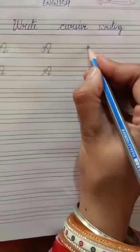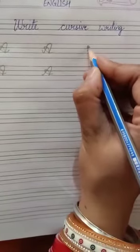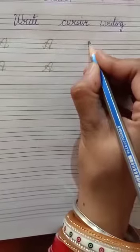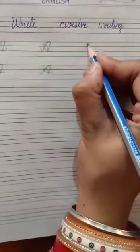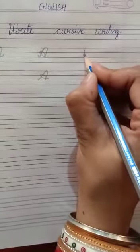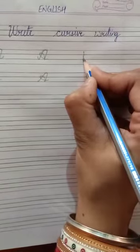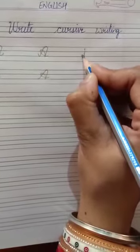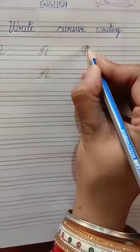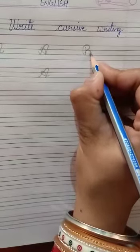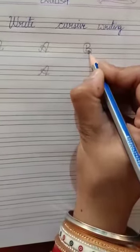Now I am going to teach you cursive B. Cursive B we are going to take from first two lines. In between we are going to take one point and from that point first we will draw one standing line downwards and then we will take this standing line upwards and then fold it like B and then fold it like this. This is our cursive B.